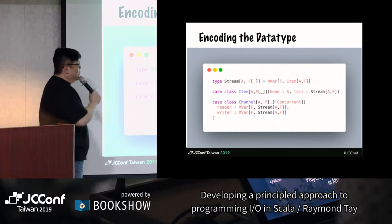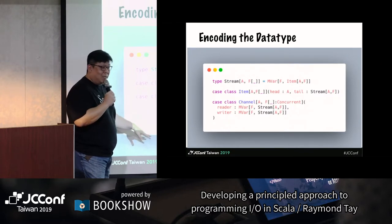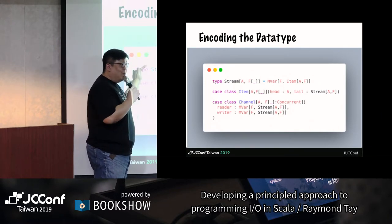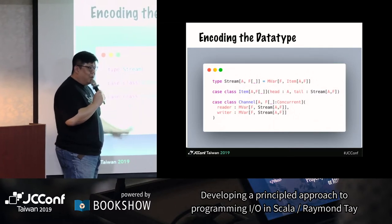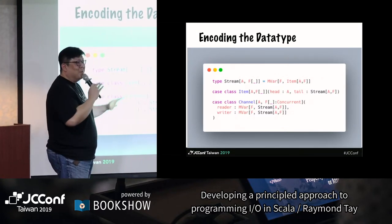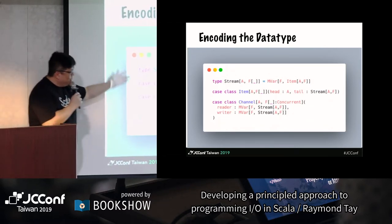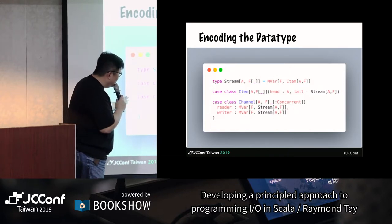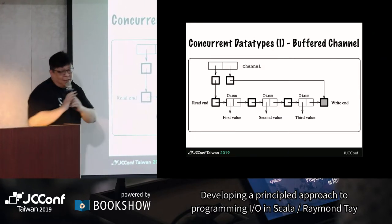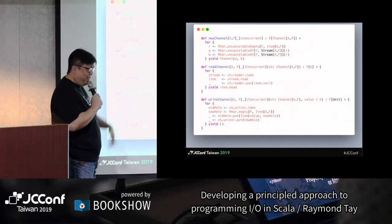I took up the challenge. I read the code in the paper and looked at what we already have in CATS effect IO. Basically this is almost word for word from the paper — you can literally translate them. This is quite a powerful concept. I'm not trying to sell Haskell, but if there was something much easier to do, why would I go the hard route? Inside here, the most important thing to know is that there's a reader and a writer, which represents the read end and the write end. There are a few more functions in the GitHub repository — I encourage you to go read it. But these are the three core ones: how to create a new channel, how to read from a channel, and how to write to a channel.